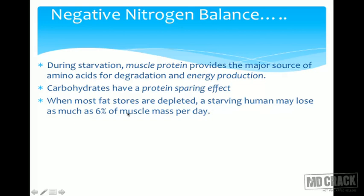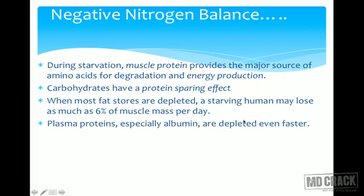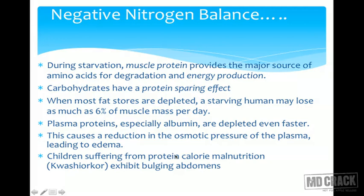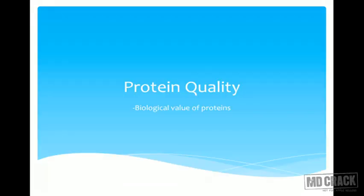During starvation, muscle proteins provide the major source for energy production. Carbohydrates have a protein-sparing effect. When most fat stores are depleted, a starving human may lose as much as 6% of muscle mass per day. Plasma proteins, especially albumin, are depleted even faster, causing reduction in colloid osmotic pressure leading to edema. Children suffering from protein-calorie malnutrition like kwashiorkor exhibit bulging abdomens due to this edema.